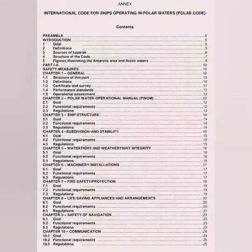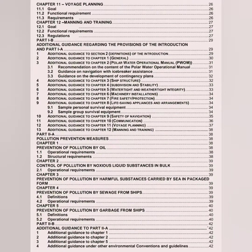Here are the pages of content for the Polar Code. There is a preamble and introduction, then Part A begins. Part 1A has 12 chapters. Then there is Part 1B, which provides additional guidance regarding the provisions of the introduction and Part 1A — guidance for the introduction plus the 12 chapters — and this has 13 sections. Part 2A has pollution prevention measures with 5 chapters, which correspond to the MARPOL annexes. In Part 2B, there is additional guidance to Part 2A, especially for chapters 1, 2 and 5, covering oil, noxious liquid substances in bulk, and garbage, plus additional guidance under other environmental conventions and guidelines.